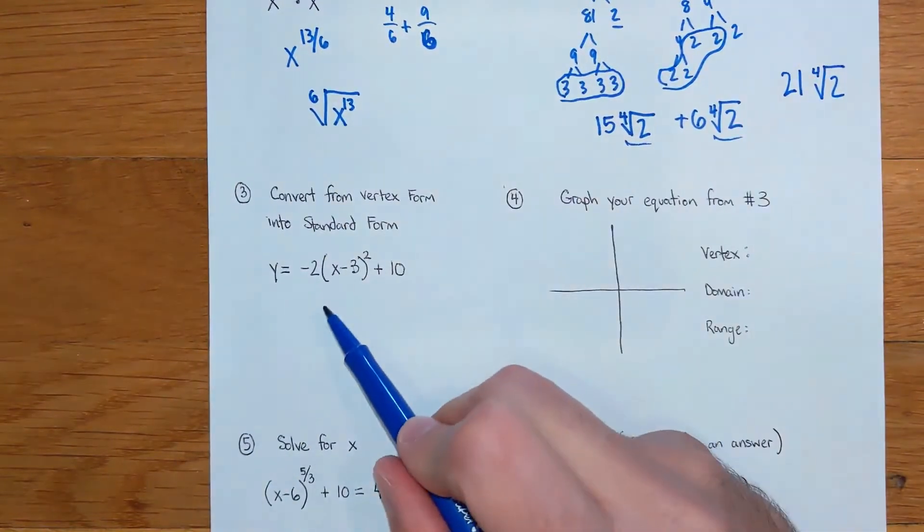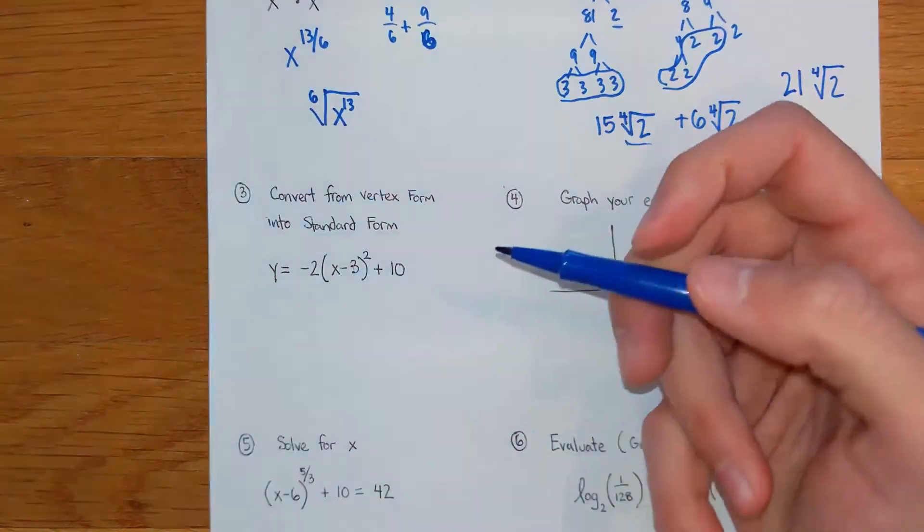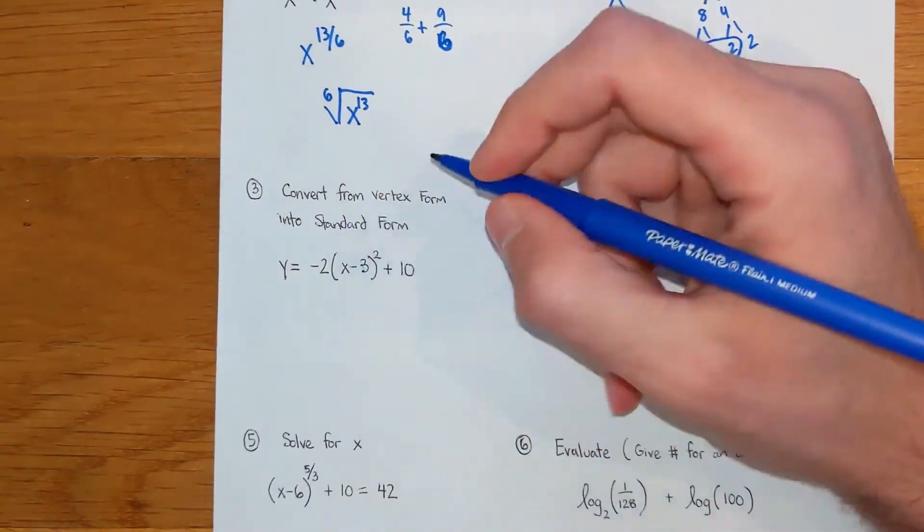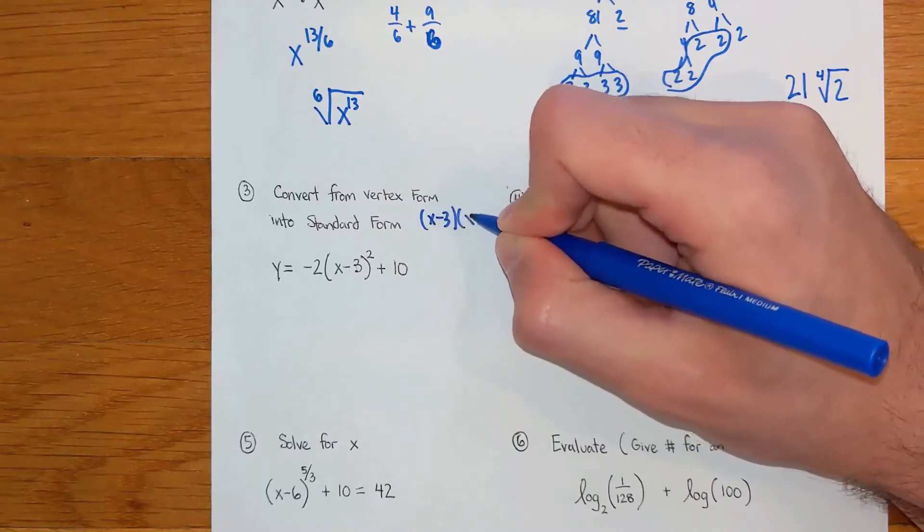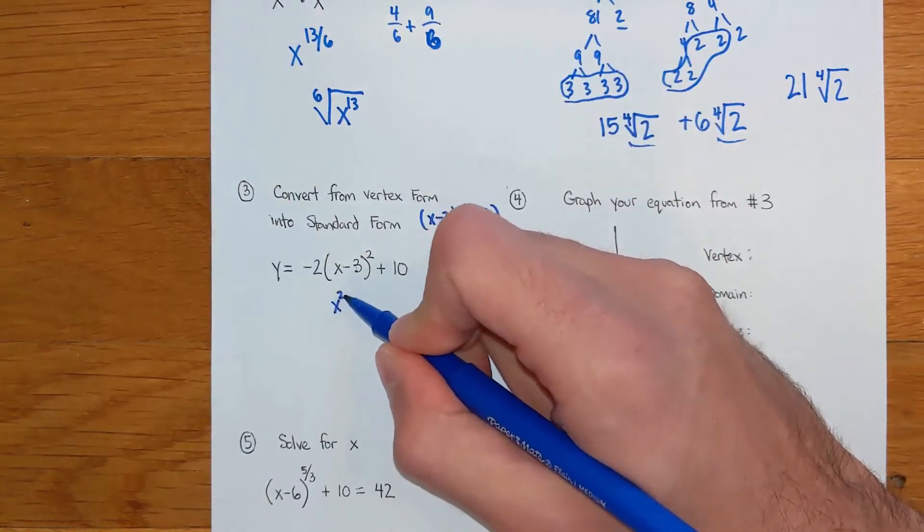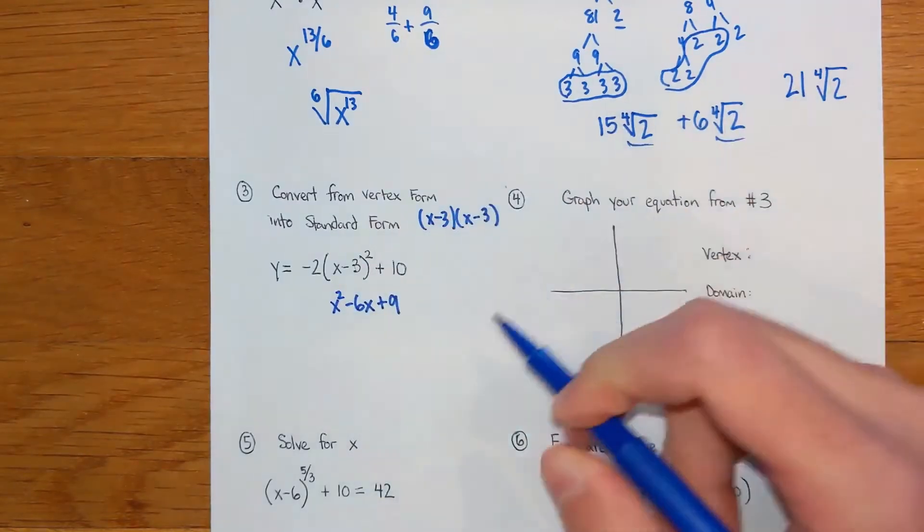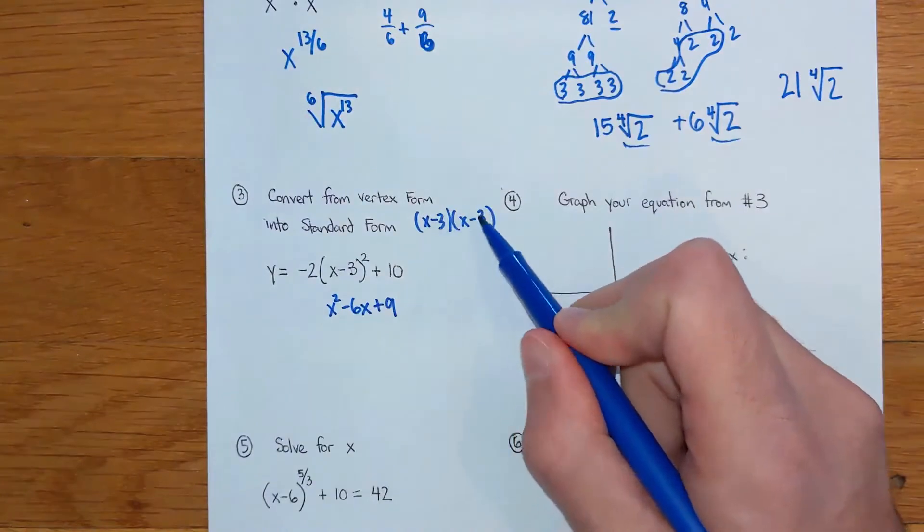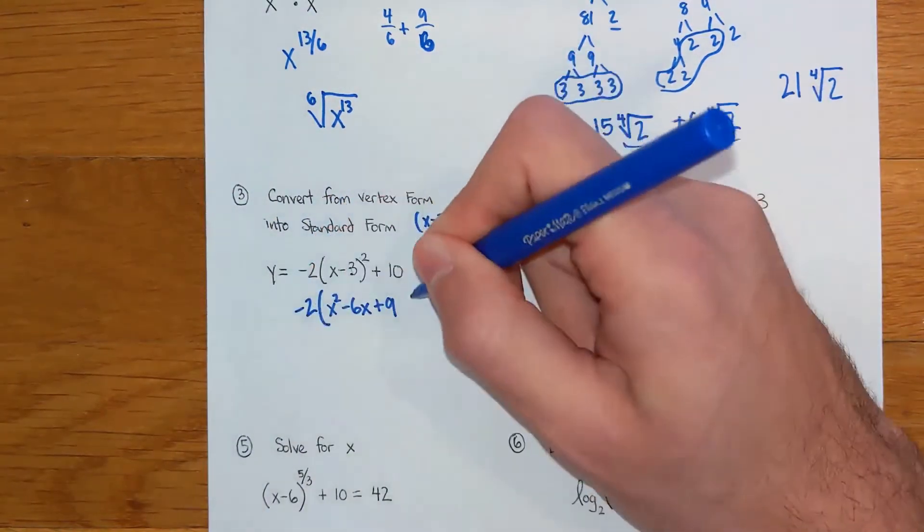All right, on to number three which is asking you to convert it from vertex form, which is this guy here with the parentheses, into standard form where everything is just multiplied out. First thing I'm going to do is FOIL my x minus three with another x minus three. If you do that you will get x squared minus 6x plus 9.